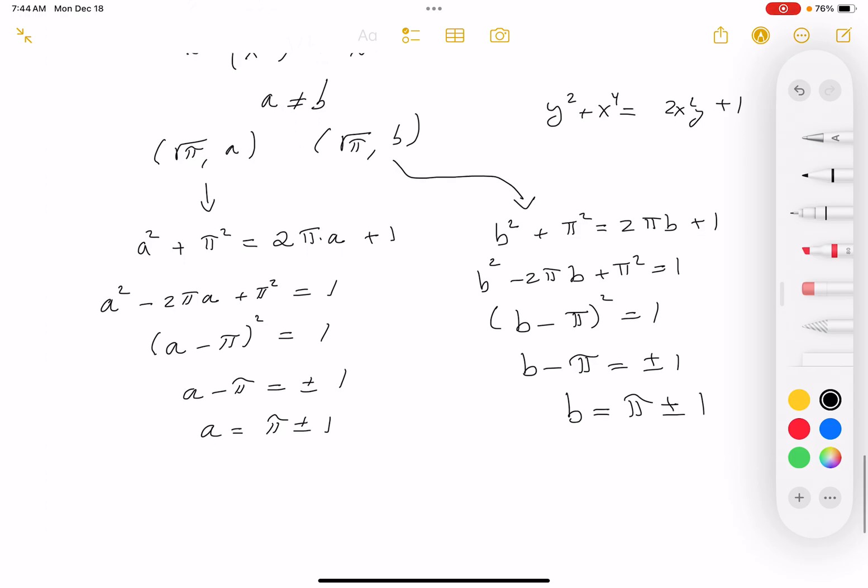So it would be (√π, π+1). If I took this a to be π + 1, I couldn't take the other one to be the same thing because they're different coordinates. It would have to be π - 1. That's a possibility. The other possibility is (√π, π-1) and that would be π + 1. That would be different.